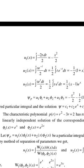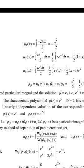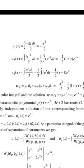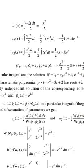u₁(x) = integral from 0 to x of (-2t) dt divided by 2, giving -x²/2. u₂(x) = integral from 0 to x of t·e^(-t) dt divided by 2, which equals (-1/2)(1 + x)e^(-x). u₃(x) = integral from 0 to x of t·e^t dt divided by 2, which equals (1/2)(x - 1)e^x.